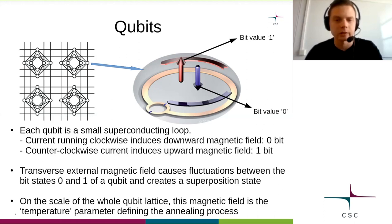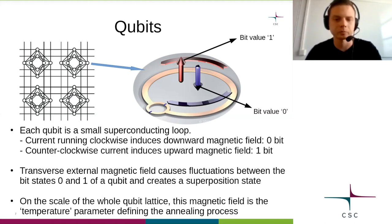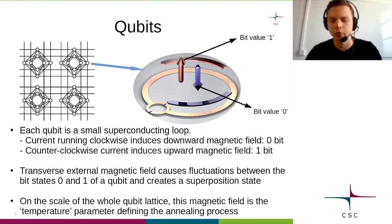Consider now the whole lattice of qubits. If the external magnetic field is off, the qubits remain in some fixed configuration, some of them pointing up and some pointing down. When the external field is switched on, all the qubits go into the superposition state and the whole lattice will be in an undetermined state. This is a quantum analogy of the metal being really hot with its atoms moving wildly around.